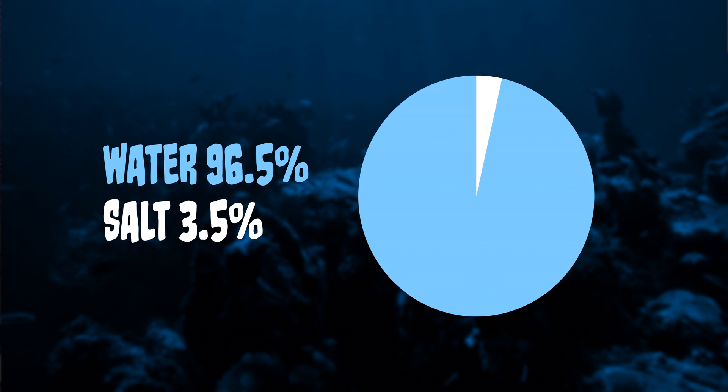On average, the salinity of the ocean is 3.5%, which is expressed as 35 parts per thousand. Salt is a term used to describe a certain kind of compound composed of two oppositely charged ions. The salt in the ocean is made up of many different ions found in different concentrations based on the rate they are used up.